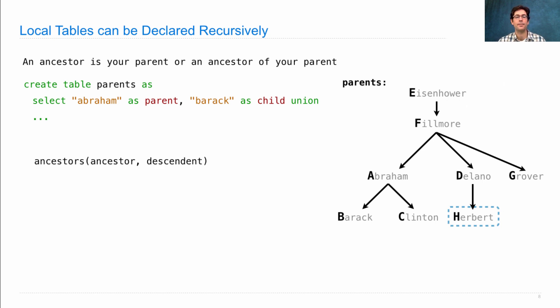How do we do that? Well, we can define a table of all ancestor-descendant pairs by declaring an ancestor's table with the following two columns as the union of selecting parent-child from parents, because your parent is your ancestor, or selecting ancestor-child from the join of ancestors and parents, where the parent equals the descendant.